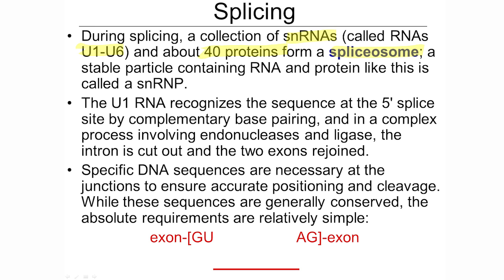The spliceosome is a large macromolecular assemblage of RNAs and proteins that functions as a whole to make sure splicing goes well. Whenever you have a stable particle that's part RNA and part protein and needs both to function, it's often called a ribonuclear protein. In this case, it's a small nuclear ribonuclear protein because it's based on the small nuclear RNAs — scientists call these SNRPs.